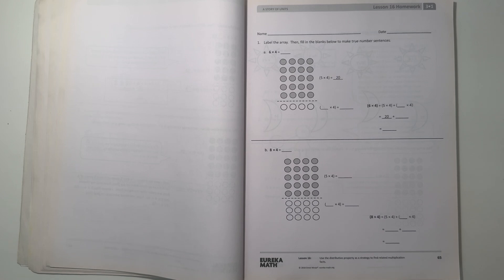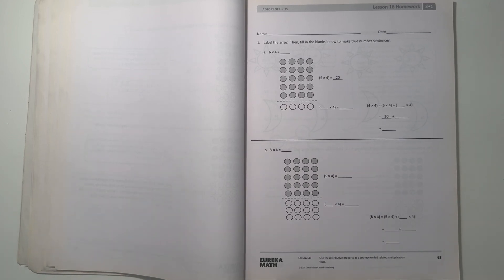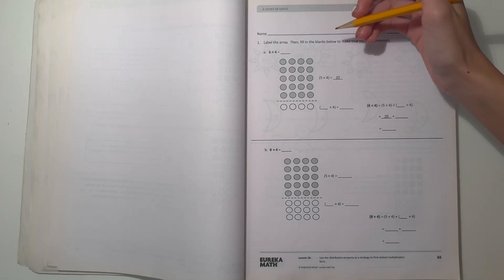Hey guys, are we here today I'm doing the Eureka Math grade 3 module 1 lesson 16 homework, so let's get started. Number one: label the array then fill in the blanks below to make true number sentences.